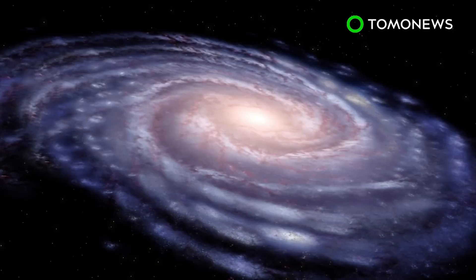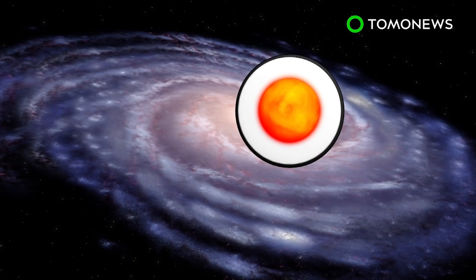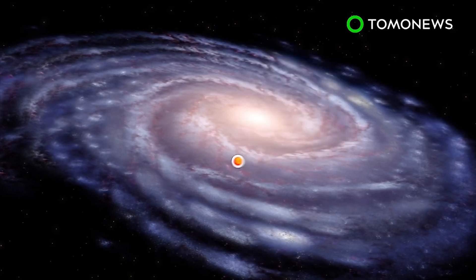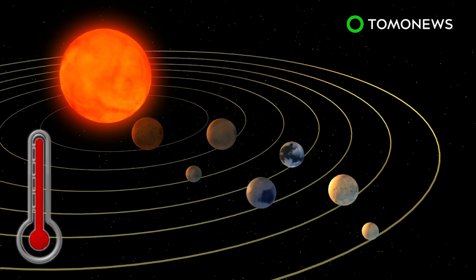Using the Spitzer Space Telescope and Earth-based telescopes, NASA scientists have found a star system called TRAPPIST-1, located 40 light-years from Earth. The ultra-compact system contains seven Earth-like planets with surface temperatures low enough to support water.